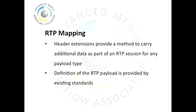The first transport type being used alongside these specifications is RTP. RTP provides header extensions, which allow means to carry additional data alongside an RTP session without changing how the payload is structured. Definitions of RTP payloads are provided by existing standards, such as RFC 4175 and 3190 for raw video and audio respectively. Additionally, by using these header extensions, we are able to maintain compatibility with existing industry specifications such as TR03 and AES67.